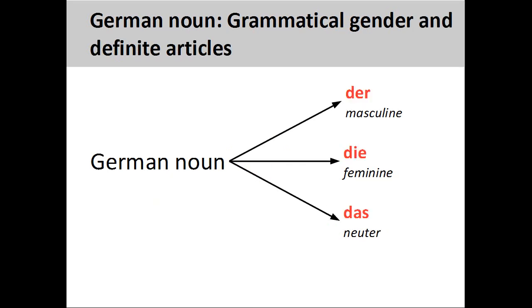The grammatical gender of a noun is seen in its definite article. 'Der' indicates a masculine noun, 'die' a feminine noun, and 'das' a neuter noun.